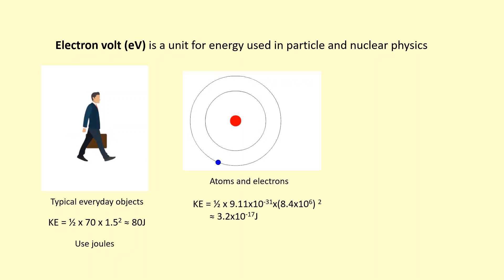However, with particle physics and physics of things inside atoms, using the mass of an electron and a typical speed of an electron, I'm getting very small energies. In this case, 3.2 times 10^-17 joules, and that's difficult to visualize and use and quite tedious writing it down.